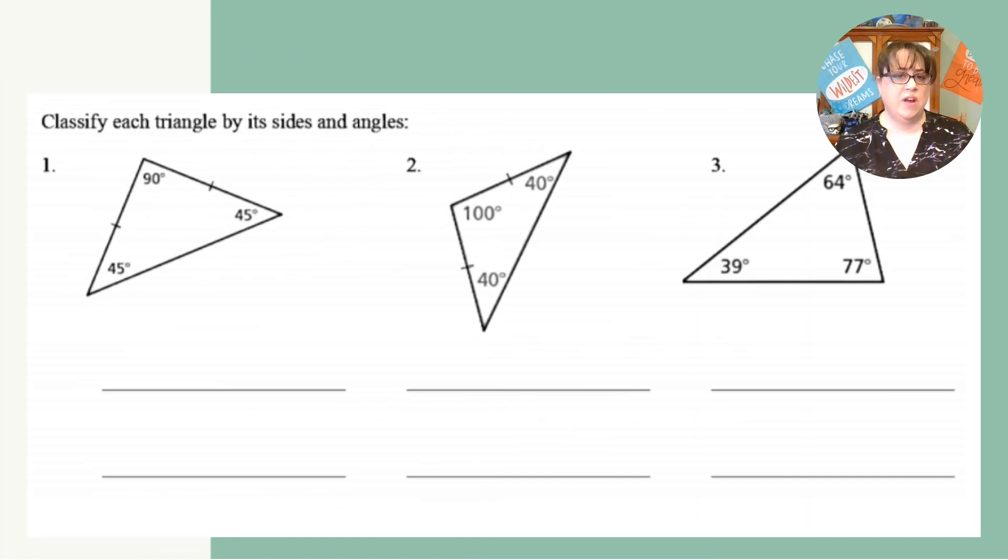So let's classify each triangle by its sides and angles. So on this first one, you can see that we have exactly one that's equal to 90, and you can see that we have two sides marked congruent. So because we have exactly one side equal to 90, that makes it a right triangle, and because we have two sides marked congruent, that makes it isosceles.